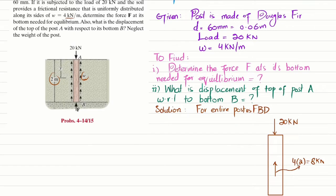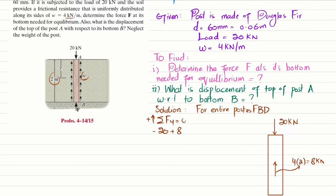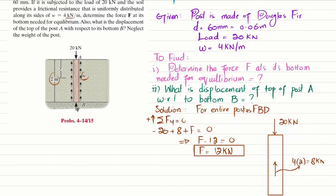Now we apply the equation of equilibrium: the sum of all forces in the y-direction must equal zero, with upward forces taken as positive. We have the 8 kilonewton force upward, F upward, and 20 kilonewtons downward. So: minus 20 plus 8 plus F equals zero, giving F minus 12 equals zero, so F equals 12 kilonewtons. This is the reaction force needed at the bottom for equilibrium — that's the answer to Part 1.